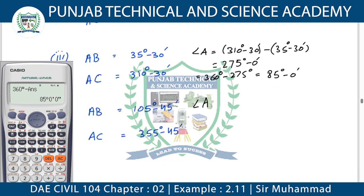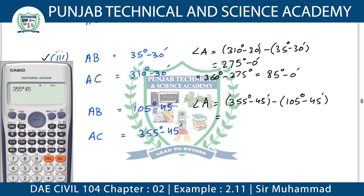If we move to the fourth question — the third is done — in the fourth you can see that the angle is 355 degrees and 45 minutes. This is the larger bearing value — line AC. The other bearing is 105 degrees 45 minutes. Taking their difference: 355 degrees 45 minutes minus 105 degrees 45 minutes. This bearing also exceeds 180 — it comes to 250 degrees.